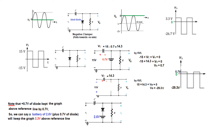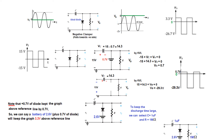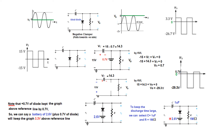This is the circuit we need. To keep the discharge time large, the capacitor should not discharge immediately, otherwise the flat portions of the output will not be maintained. We select a reasonable value: C equals 1 microfarad and R equals 1 megaohm, giving a time constant of 1 second, which is good enough. The complete circuit with these values will realize the desired output.